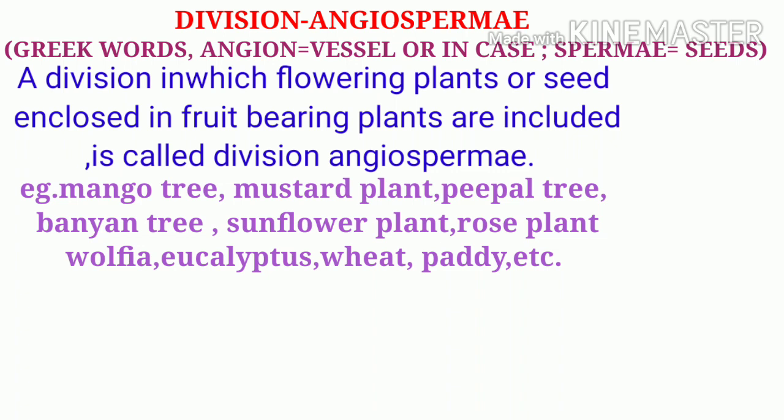A division in which flowering plants or seed-enclosed fruit-bearing plants are included is called Division Angiospermia. For example: mango tree, mustard plant, peepal tree, banana tree, sunflower, rose plant, Wolffia, eucalyptus, paddy, wheat, etc.